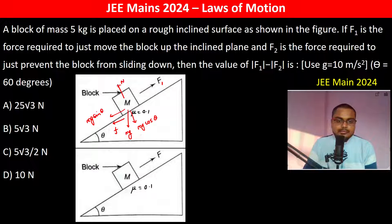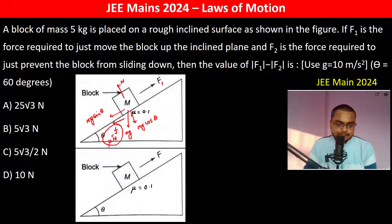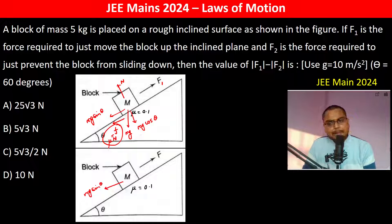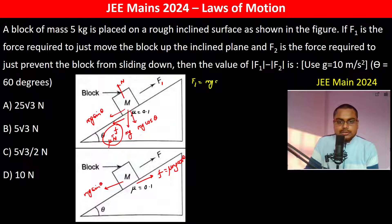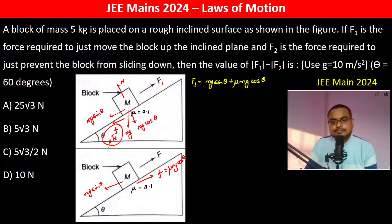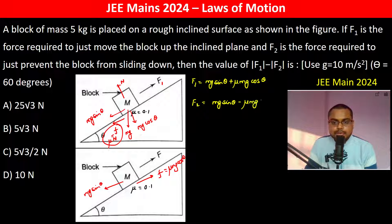The normal force N acts upward. So friction will act. Since it is limiting (just about to slide), Mg sin theta is present. When the block is about to slide down, friction acts up the incline. F1 equals Mg sin theta plus mu Mg cos theta, and F2 equals Mg sin theta minus mu Mg cos theta.